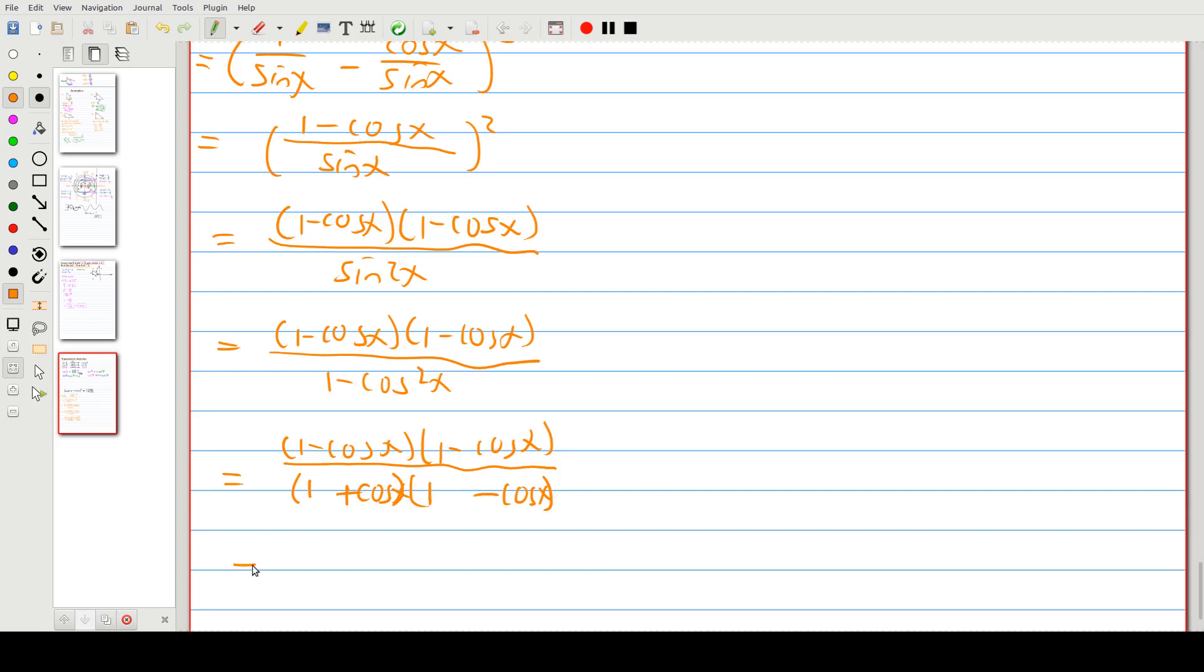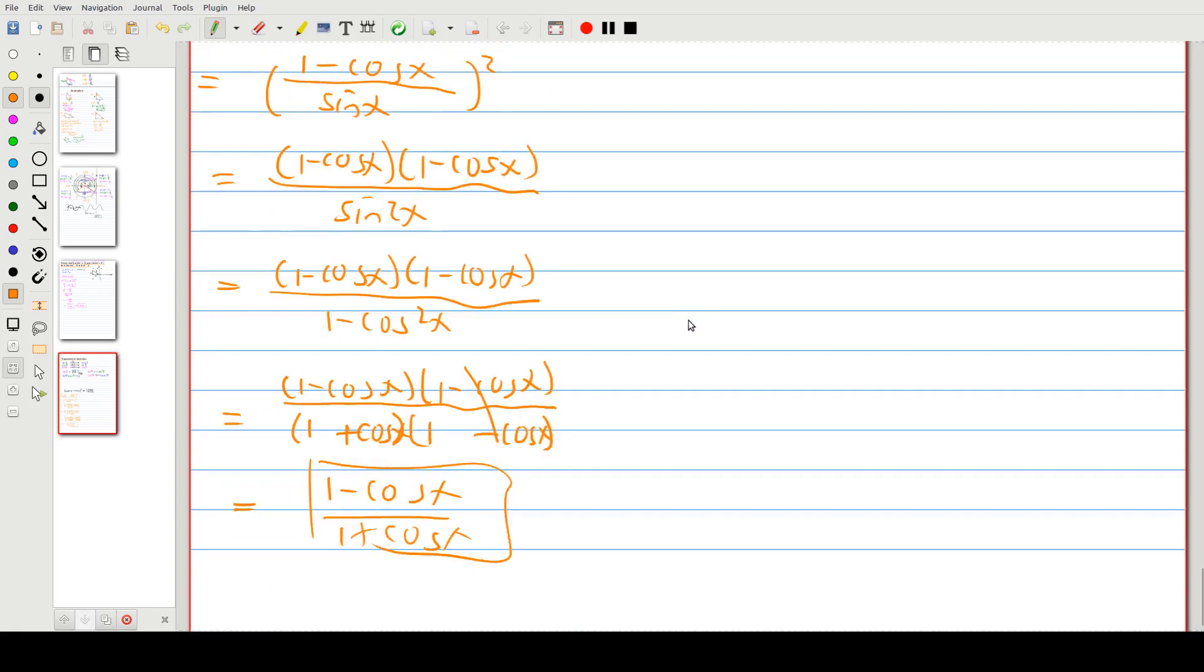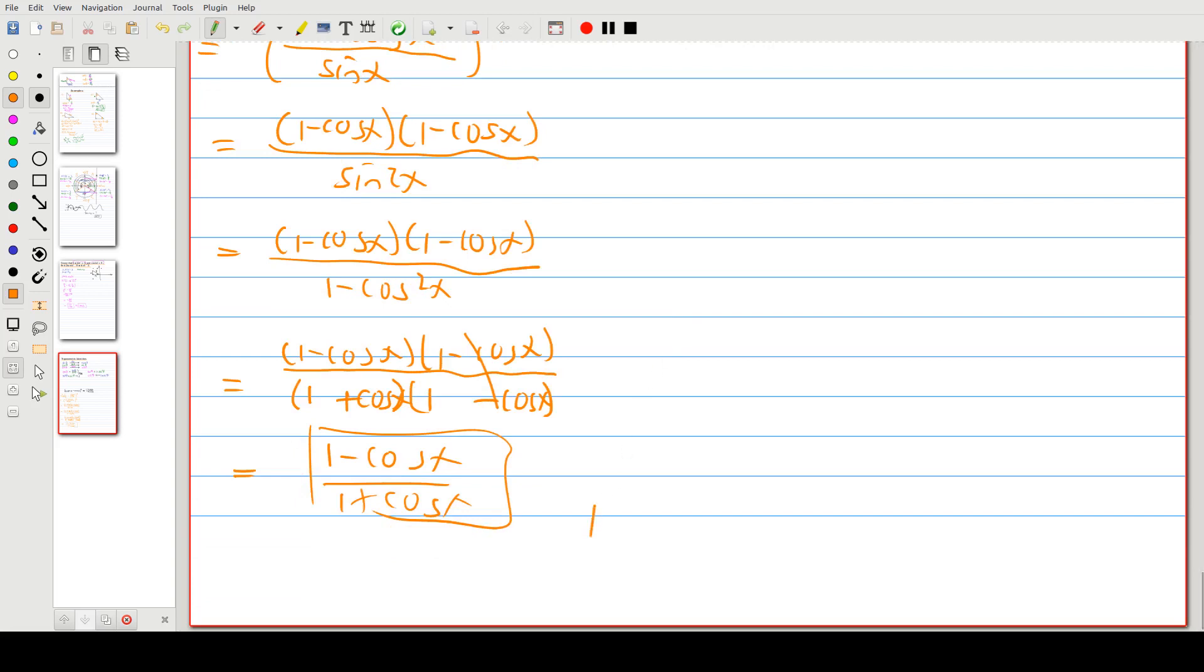All right so now we're pretty much done. We can see we've got one term over one term so we can cancel things out. They cancel out and we're left with one minus cos x over one plus cos x. And is that what we want? Yes that's exactly equal. So then we can just say left hand side equals or is identical to right hand side. And we are done.